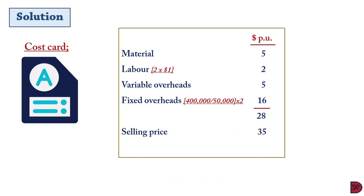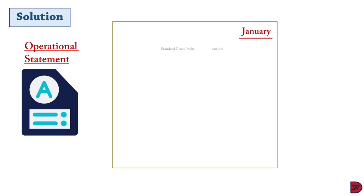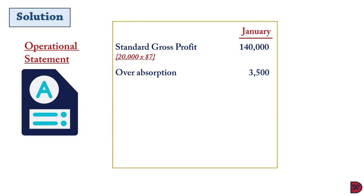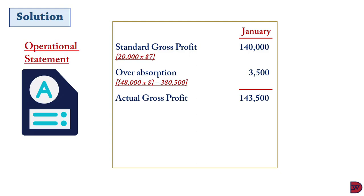The service fee is thirty-five dollars, so the standardized profit per unit is seven dollars. For January, standardized profit is one hundred and forty thousand dollars — twenty thousand service units multiplied by seven dollars. We adjust for over or under absorption: actual hours of forty-eight thousand multiplied by the absorption rate of eight dollars gives absorbed overhead of three hundred and eighty-four thousand dollars, less actual overhead of three hundred and eighty thousand five hundred dollars, giving over absorption of three thousand five hundred dollars — added back. Actual gross profit is one hundred and forty-three thousand five hundred dollars.